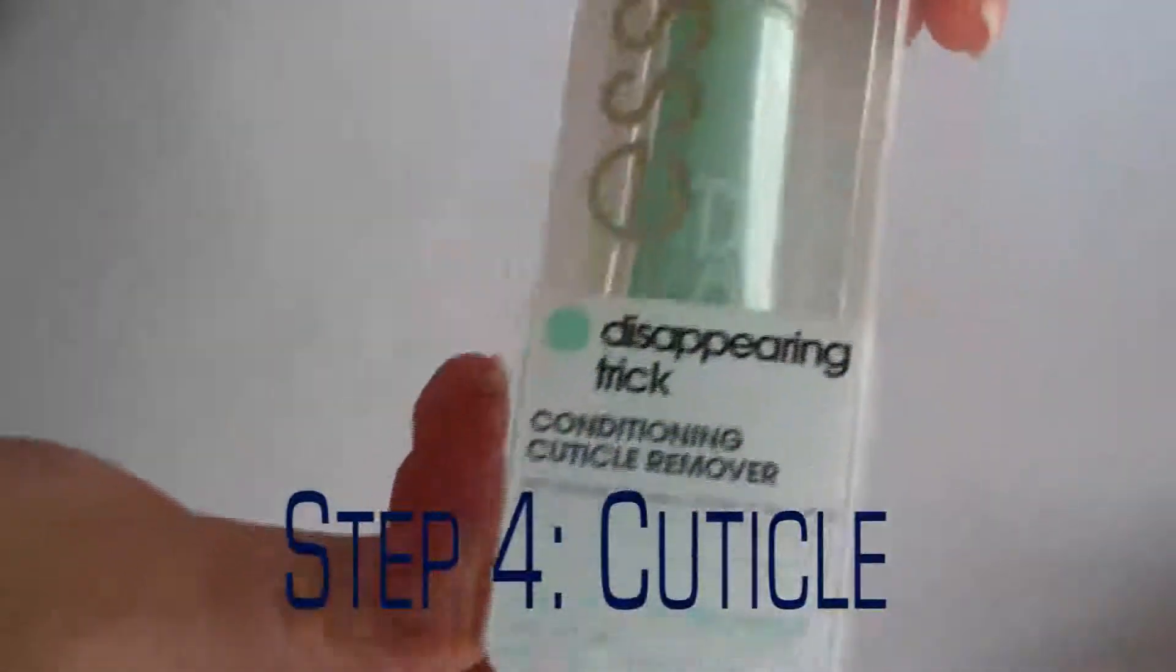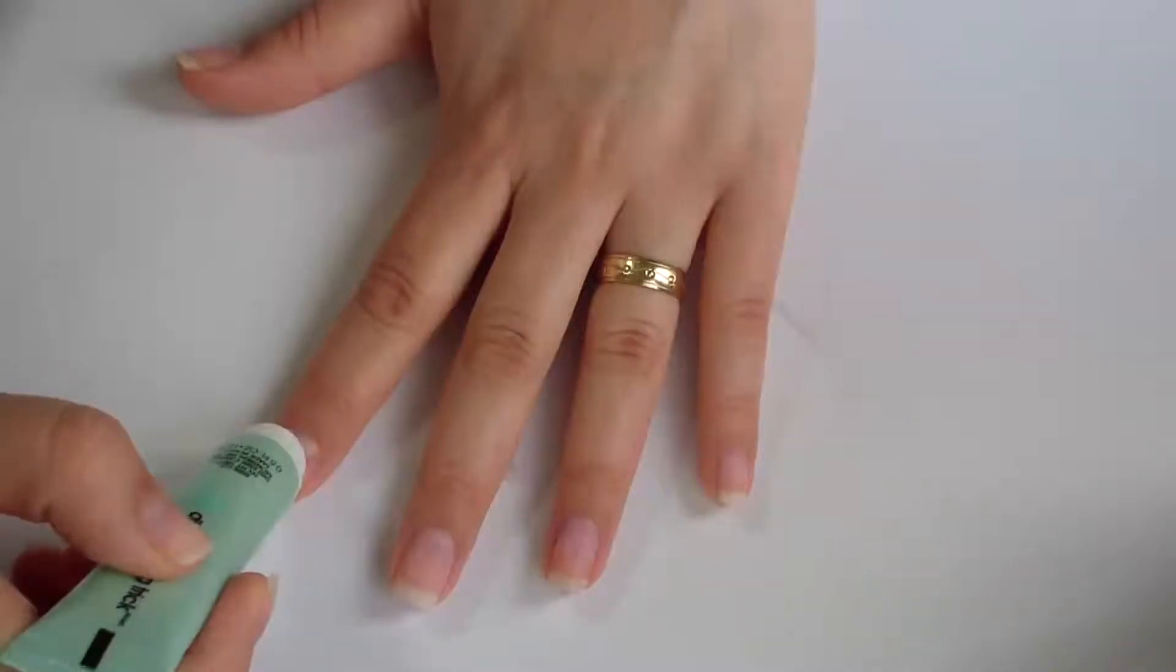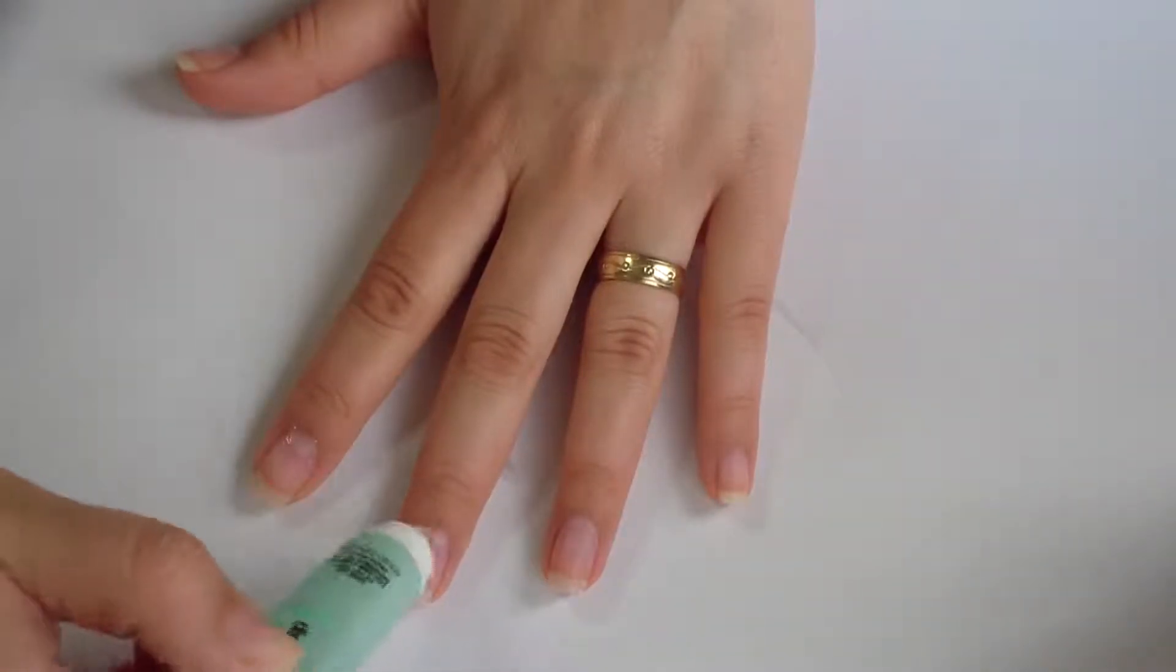Step four, cuticle. I'm going to be using this Conditioning Cuticle Remover from Essie. I'm going to squeeze a generous amount onto each cuticle of my nails.